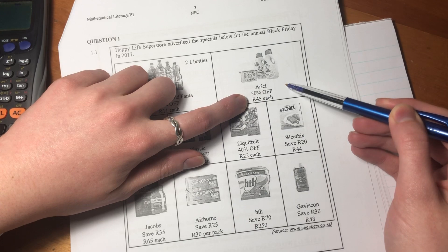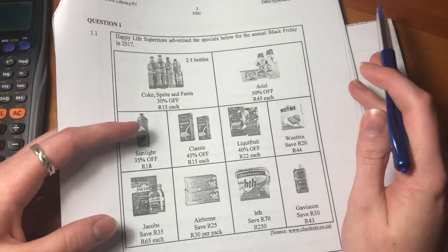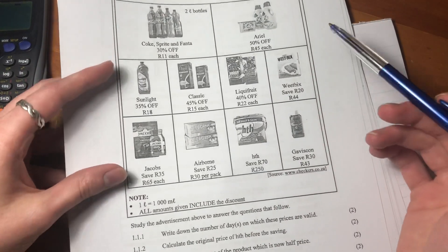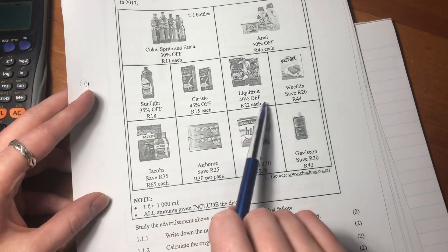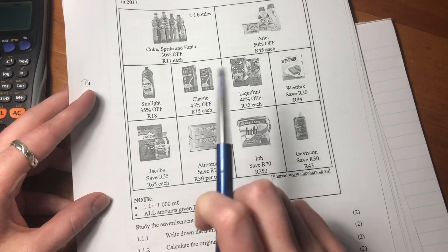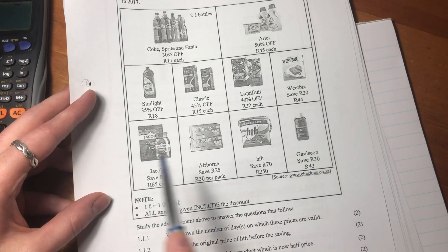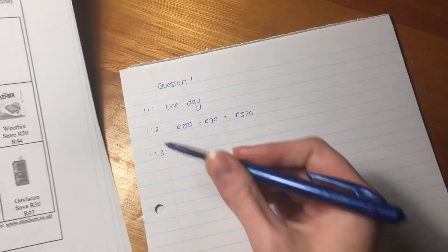50% off means that we halved the original price. So the original price was 90, and then we took 50% off and got to 45. So the answer there is Ariel washing powder.